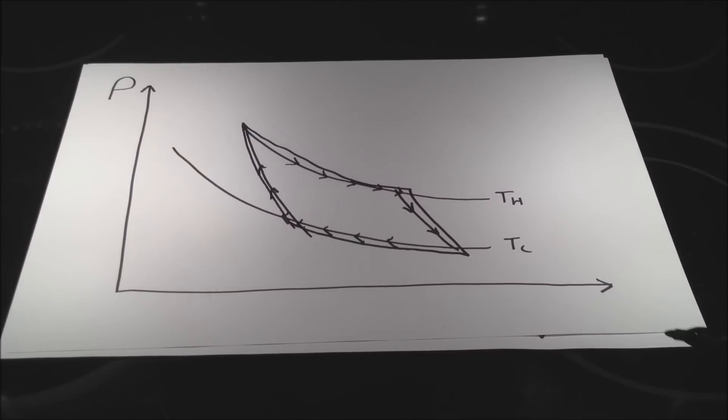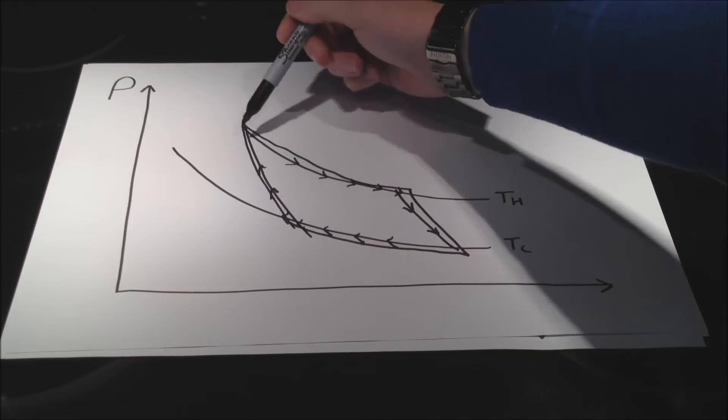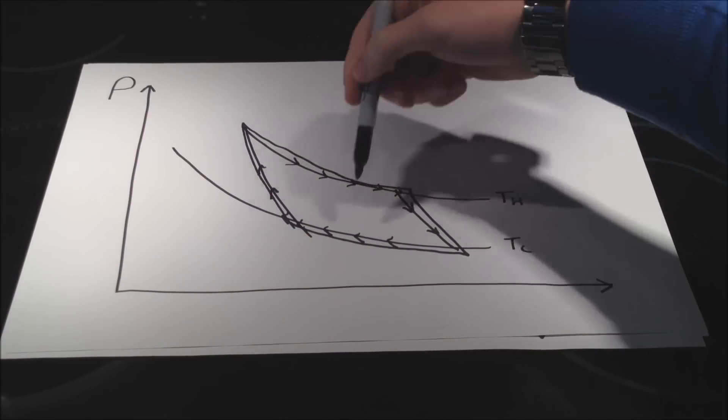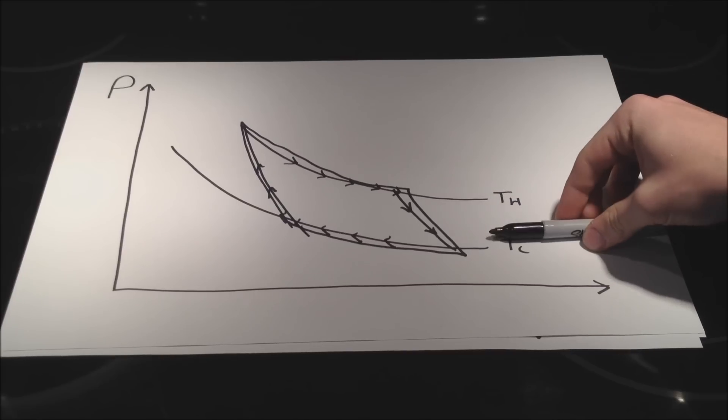Now, another way to examine if this is efficient or not is to look at it graphically, remembering that the area within the cycle is the network done per cycle. You want to maximize the area within the cycle as long as you're operating between the same two temperatures.